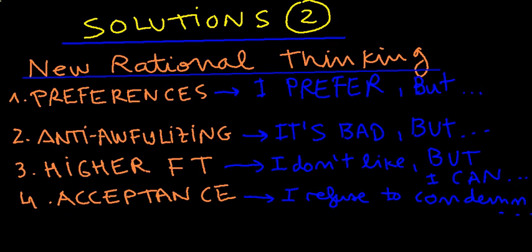Well, what's our goal? Our goal is to develop a new rational thinking, a new philosophy. First, we want to develop preferences when we think about language learning or anything. I would say to myself that I prefer to learn languages, I prefer to learn Mandarin or Spanish or whatever. But there is no reason in the universe that I must succeed or I must do it. It's important.